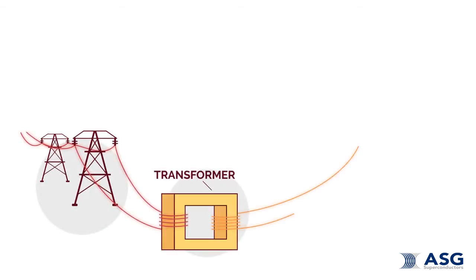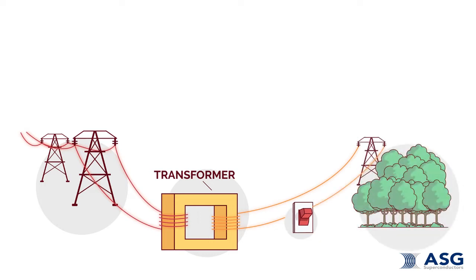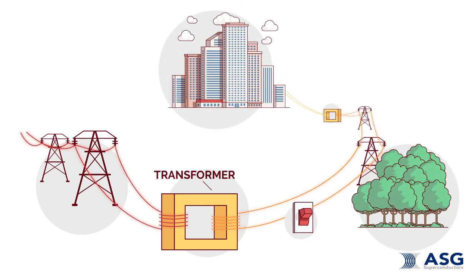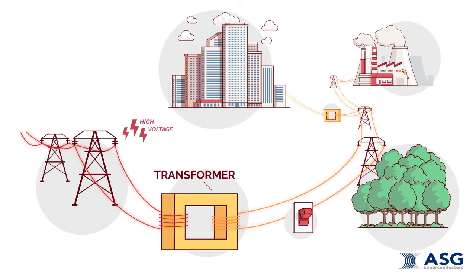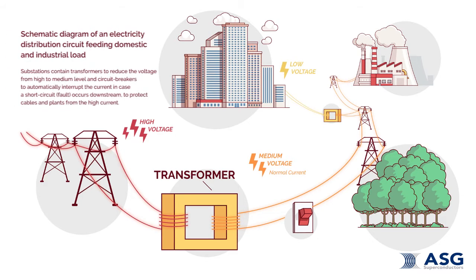The diagram shows an electricity distribution circuit feeding domestic and industrial load. The electricity is supplied by a transformer connected to the high voltage grid. The distribution circuit at medium voltage is connected to the transformer by a circuit breaker, which opens if a short circuit occurs downstream to protect the network components from becoming damaged by the short circuit current.